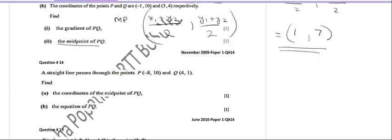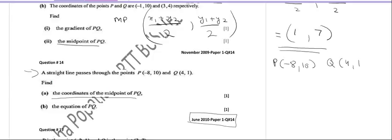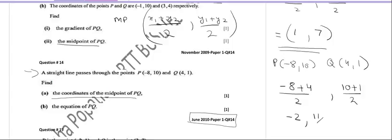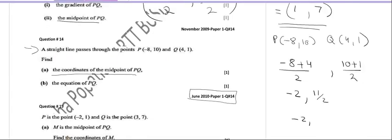In the next question, question number 14, from June 2010 Paper 1, we calculate the midpoint again. A straight line passes through P(-8, 10) and Q(4, 1). Using the midpoint formula: (-8 + 4)/2 = -4/2 = -2, and (10 + 1)/2 = 11/2 = 5.5. So the midpoint is (-2, 5.5).